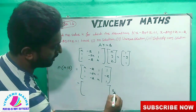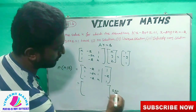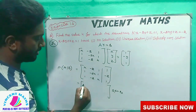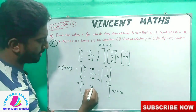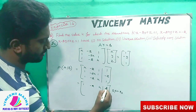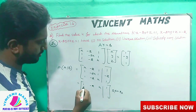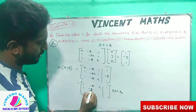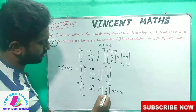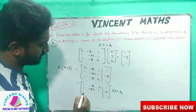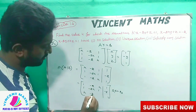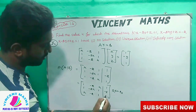We have to do row operations. R1: 1, minus 2, k. R3: k, minus 2, 1, 1. We apply rho3 minus k times rho1 to eliminate the k in the first column of row 3.